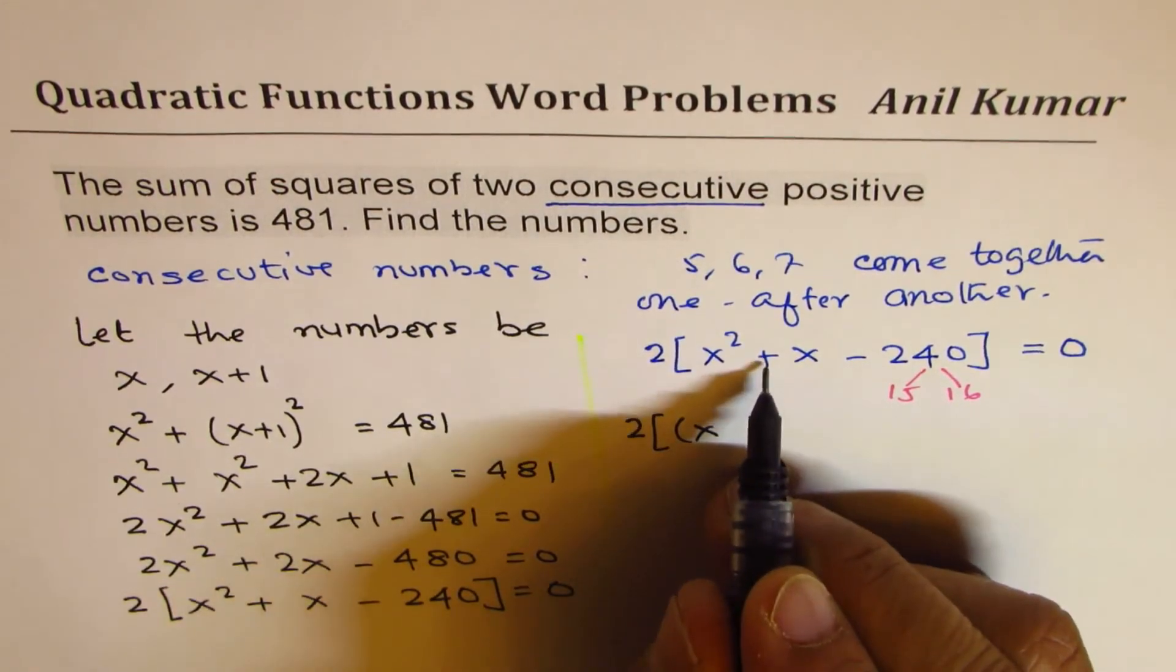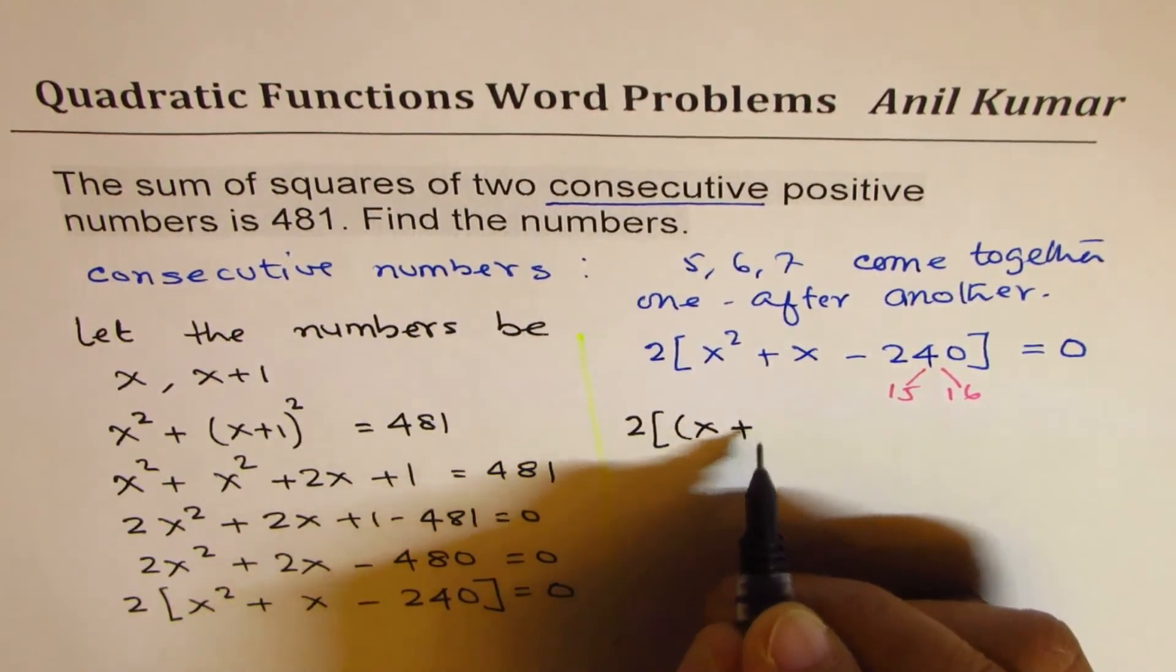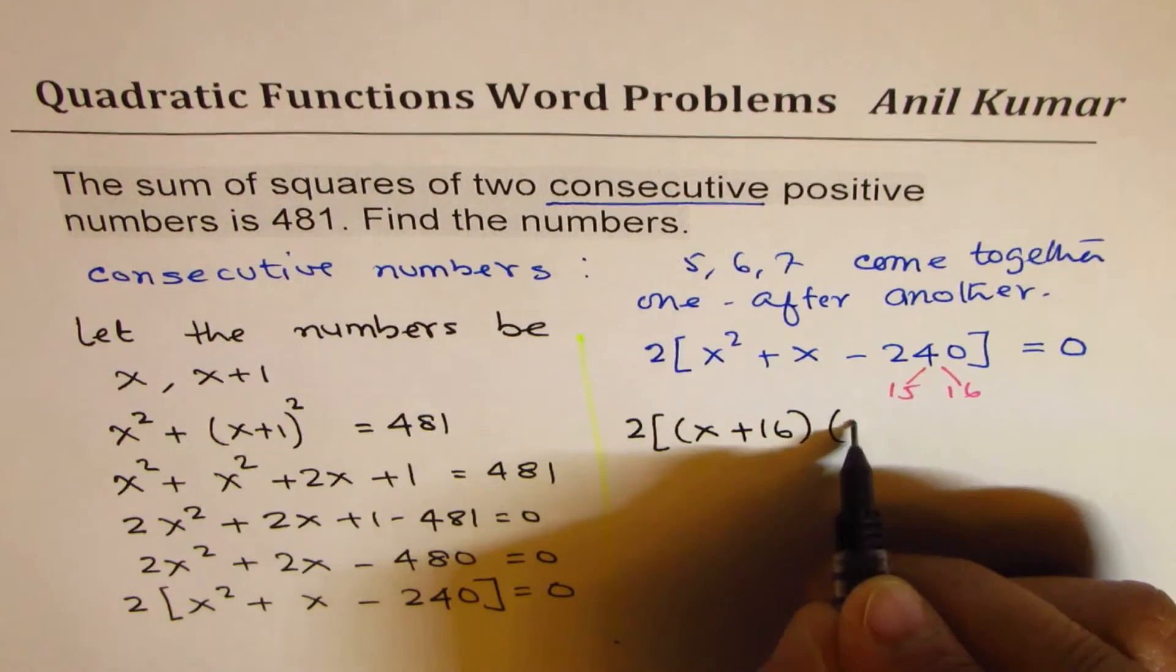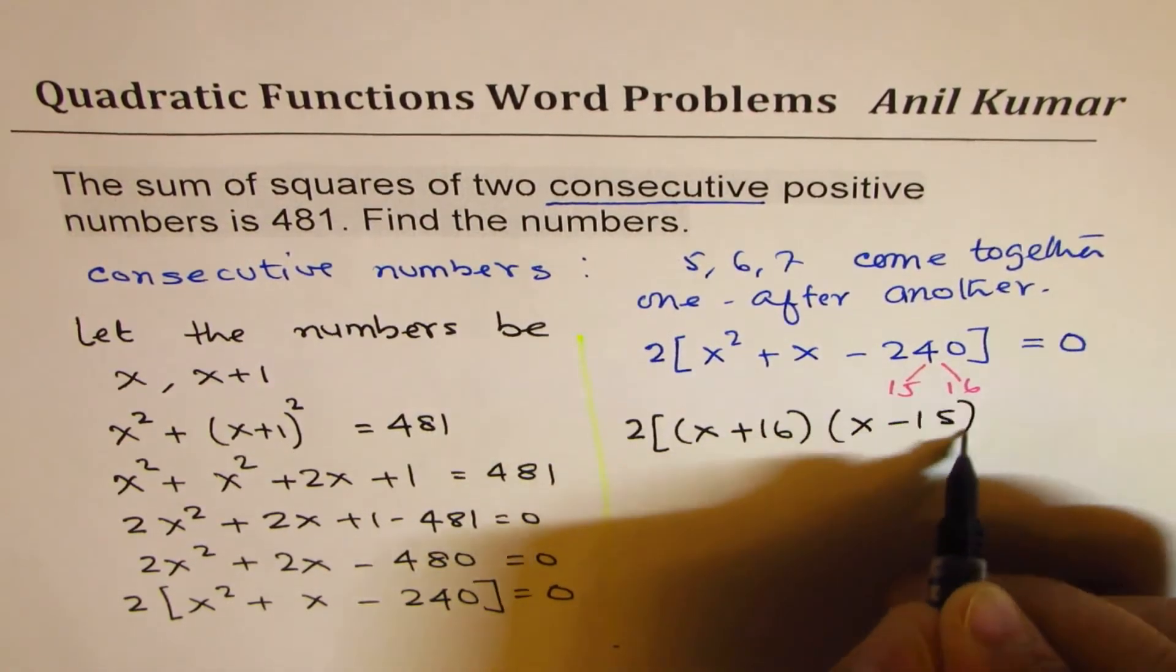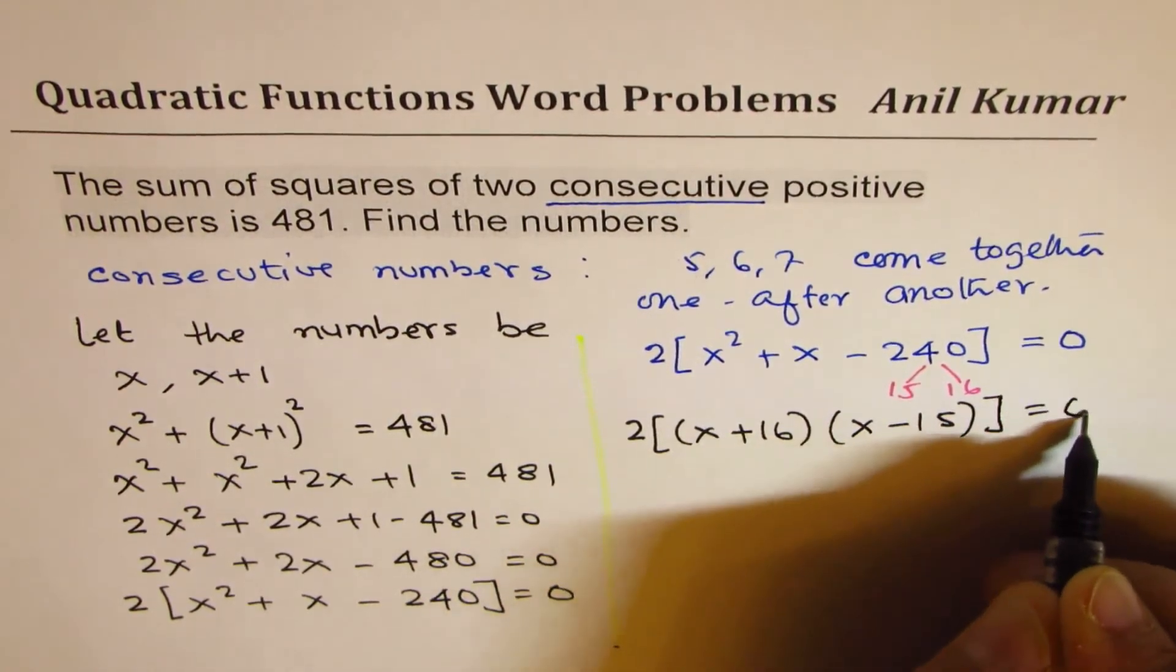(x plus 16)(x minus 15) equals 0. Since we want this to be positive, we'll keep 16 as positive.